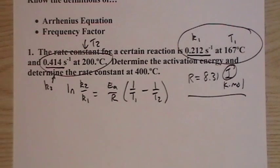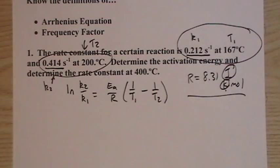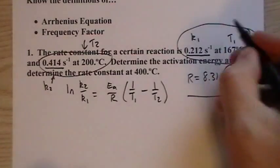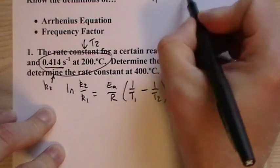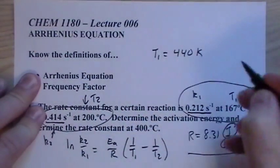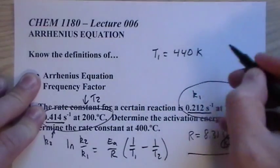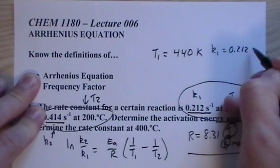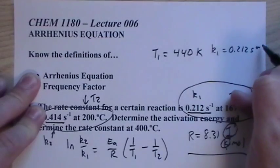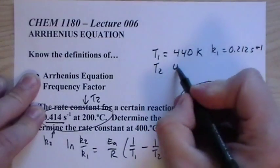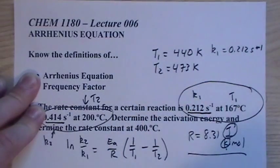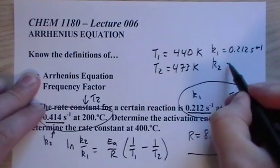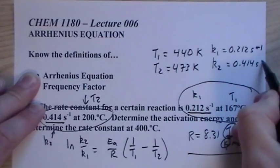So 167, we're dealing with a gas constant that has units of Kelvins, so we have to convert to Kelvins. T1 is going to be 440 Kelvin. And T2, let me write out k1 here. T2 is 200 Celsius, which is 473 Kelvin. And k2 is 0.414 inverted seconds.